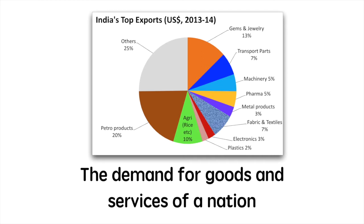I've included an image of India's exports in 2013-2014 as measured in dollars. As India's reputation for the production of some of these goods improves, the likelihood of exporting these goods may rise. Additionally, a rise in incomes of a major trading partner may also cause them to export more to those markets. These changes in demand can also work in the opposite direction, with decreases in demand causing the currency to depreciate.